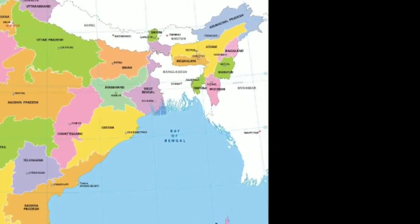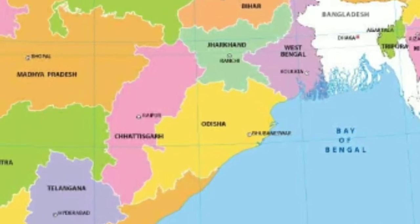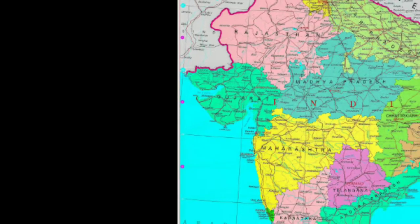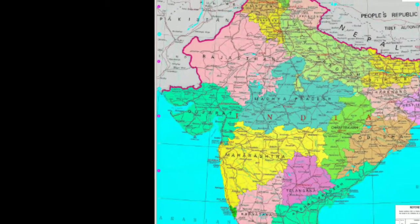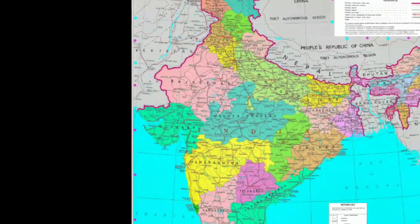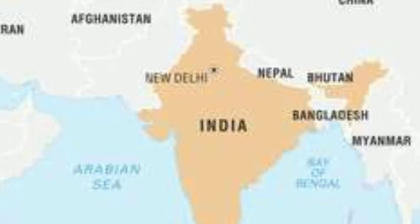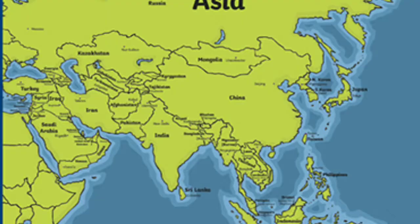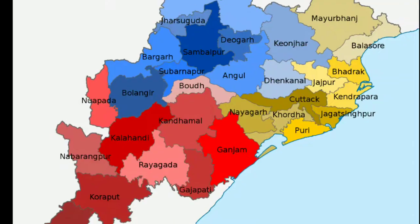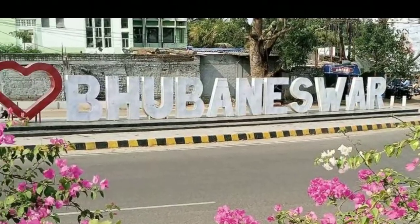Friends, do you know what is a map? A map is a two-dimensional representation of the earth on a flat surface. We can draw maps of continents, countries, states, cities and neighborhoods.